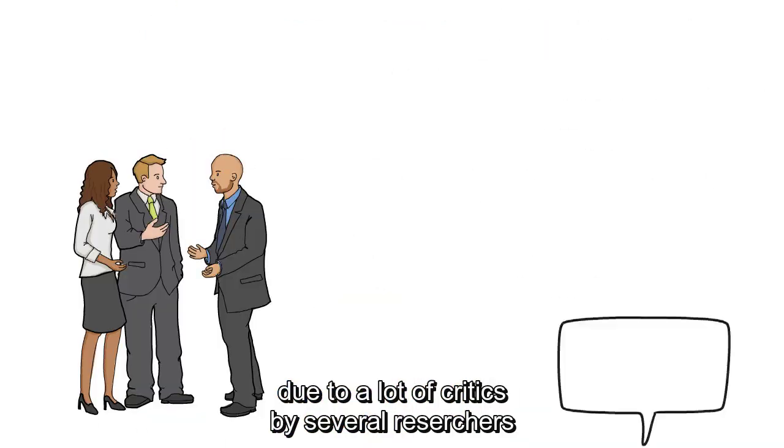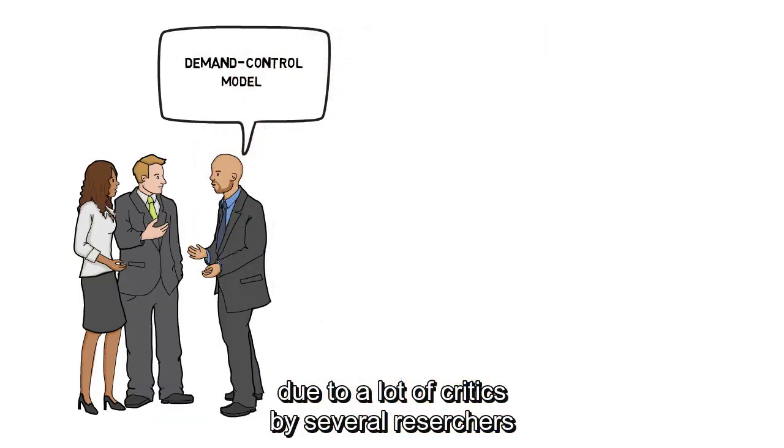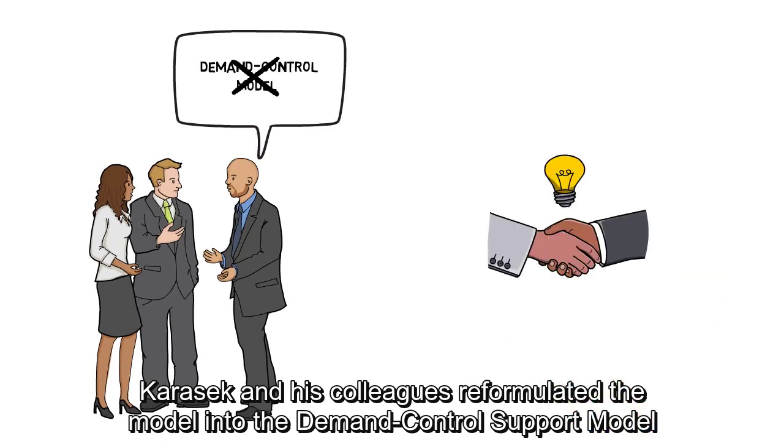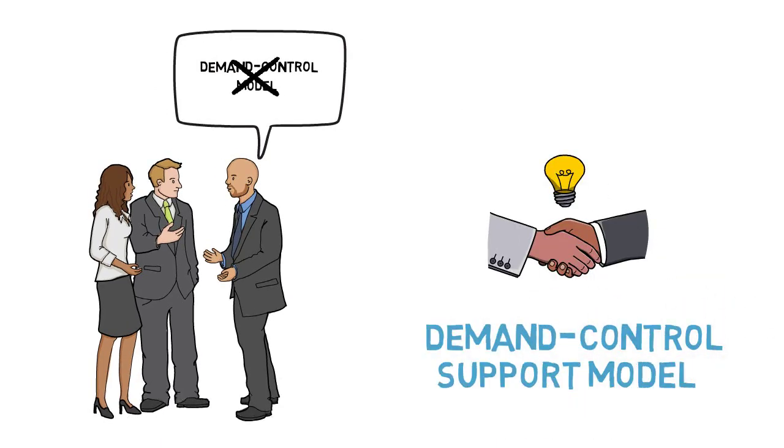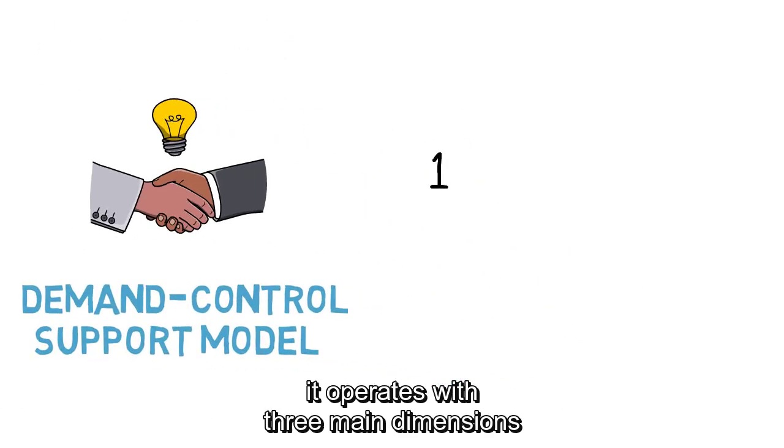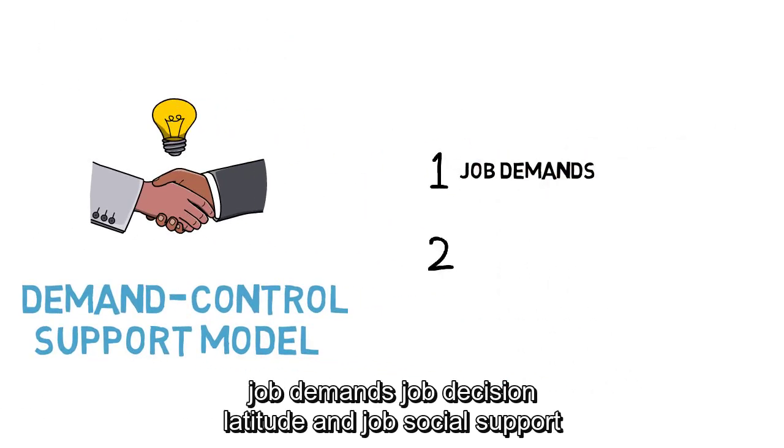Due to a lot of critics by several researchers, Karasek and his colleagues reformulated the model into the demand-control-support model. It operates with three main dimensions: job demands, job decision latitude, and job social support.